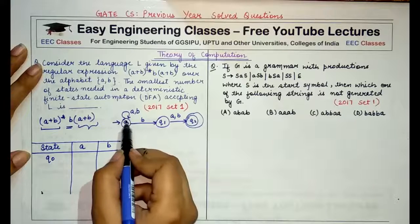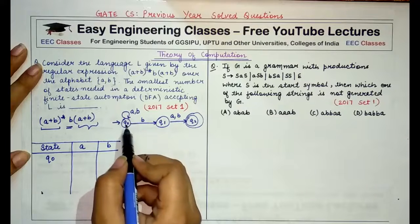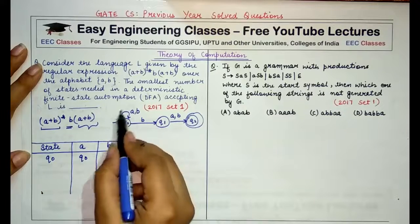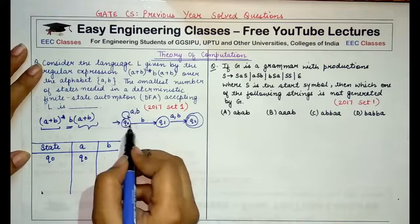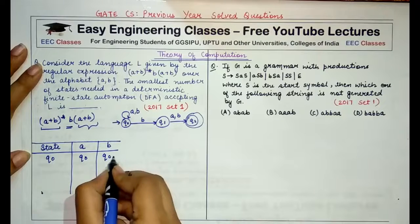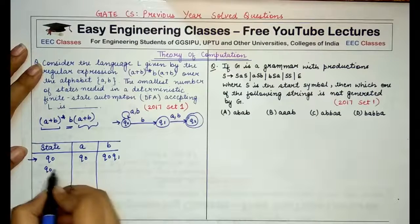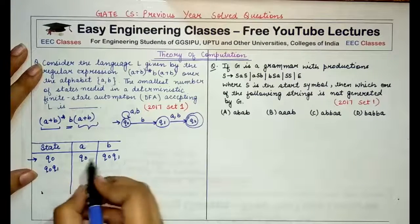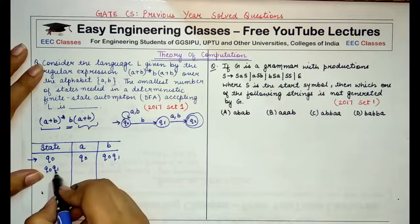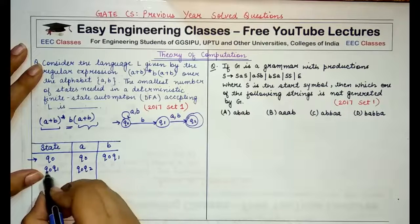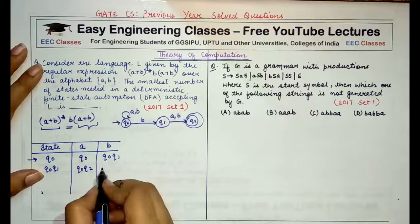Starting with the state q0, I see on a we transfer or we go to q0 only and in case of q0 reading b I go to q0 and q1. So the state is {q0,q1}. Now from q0 q1 reading a I will go to q0 and q2.